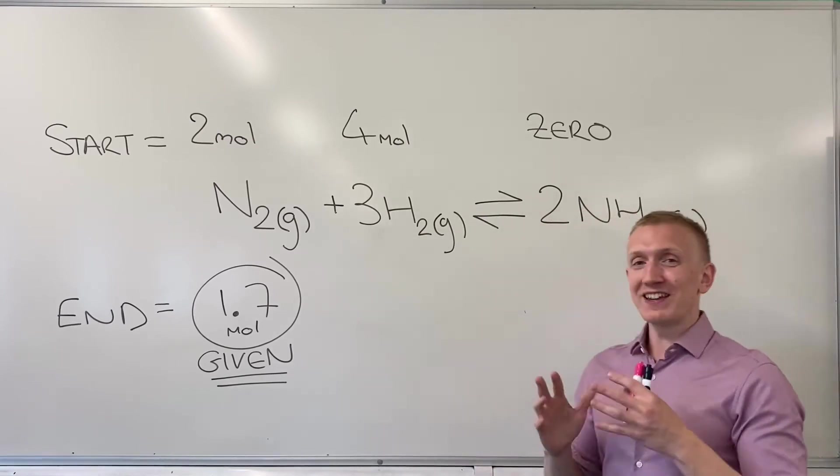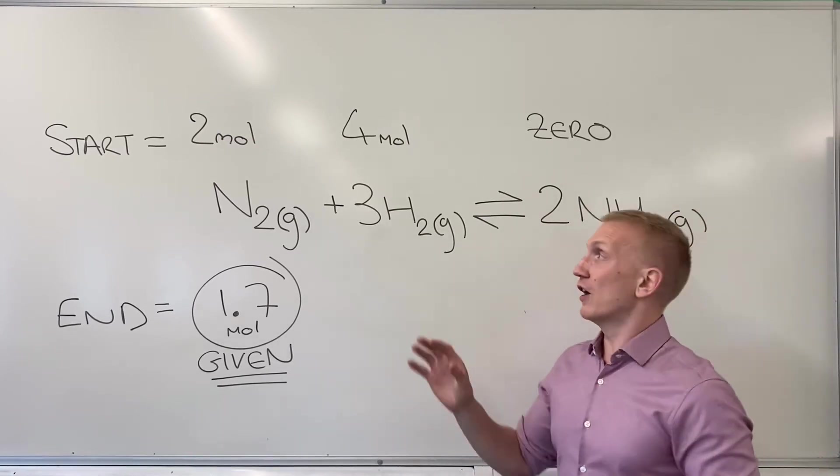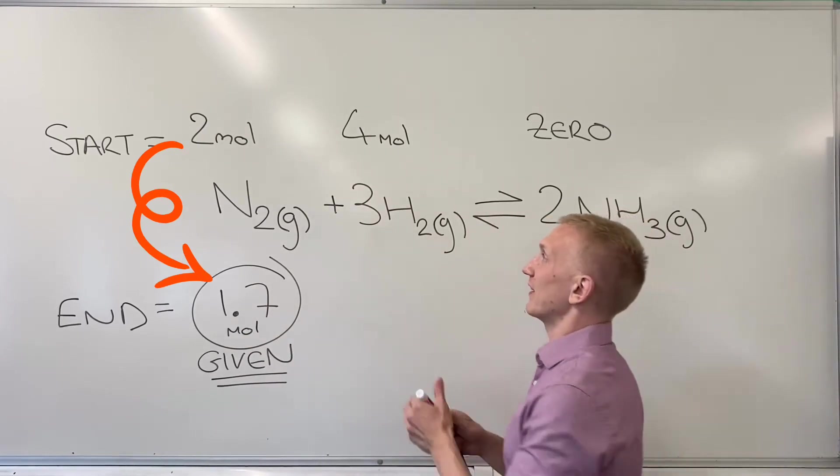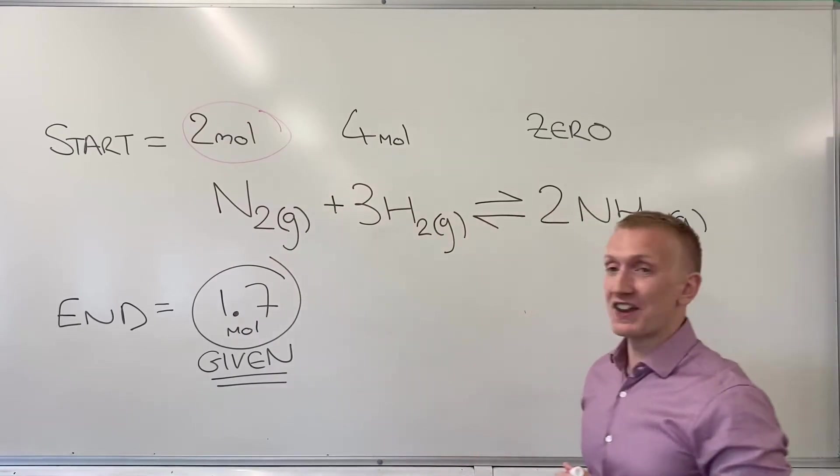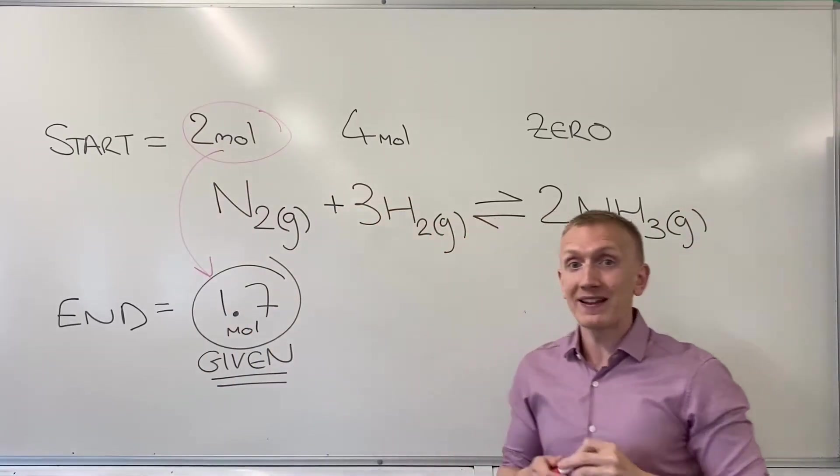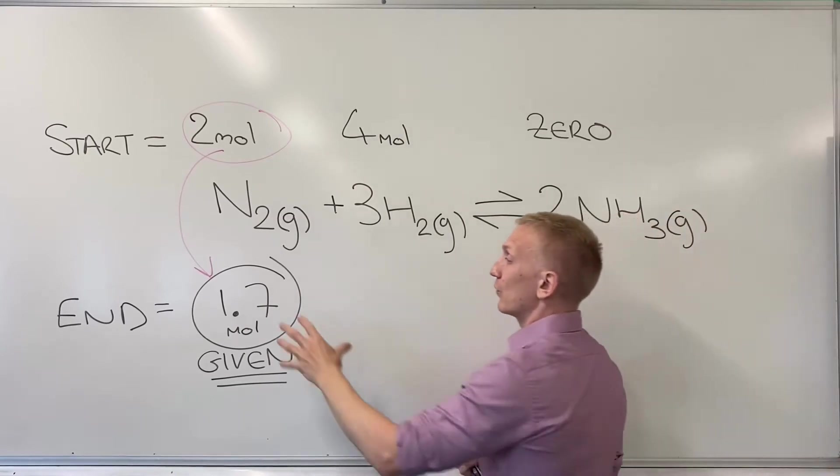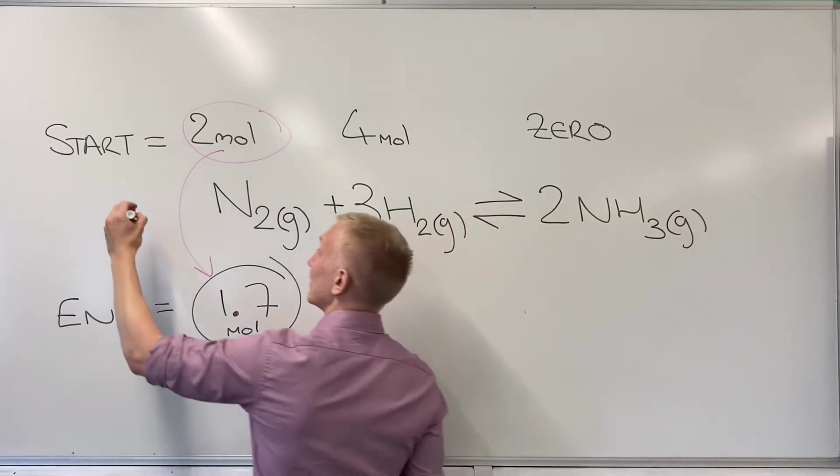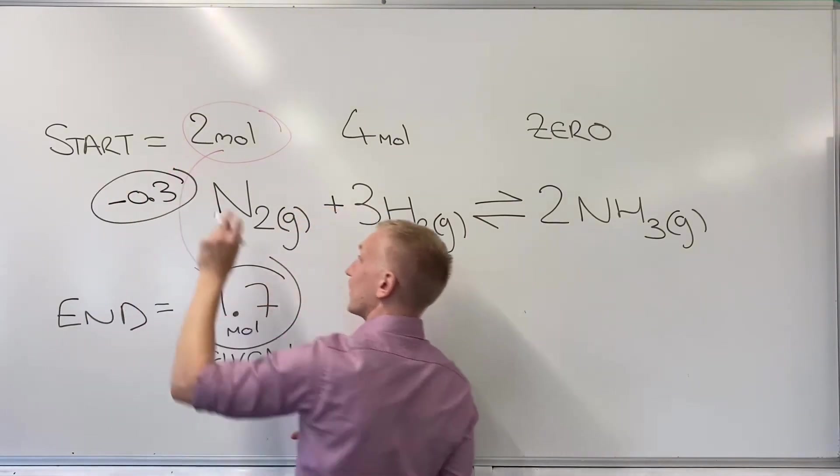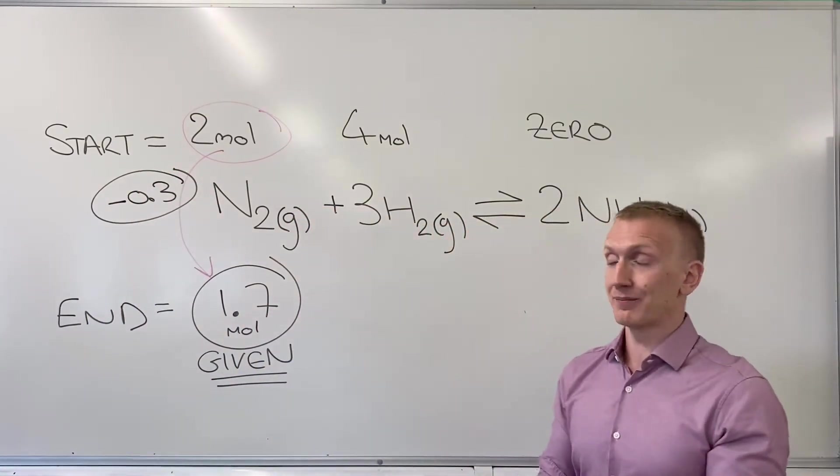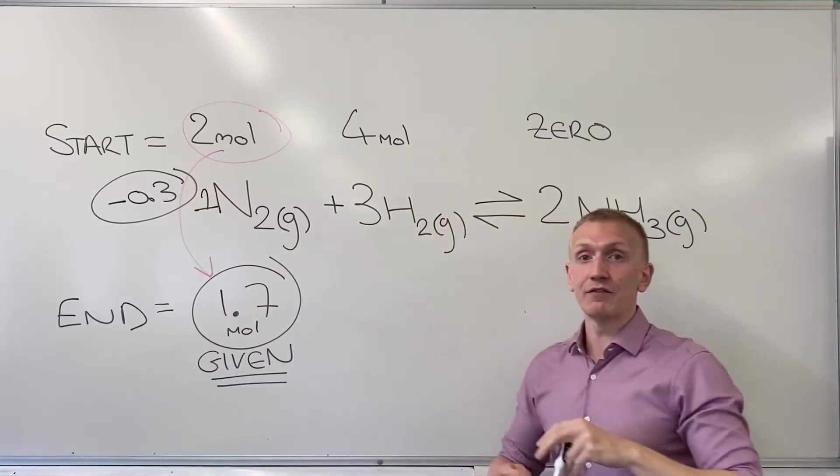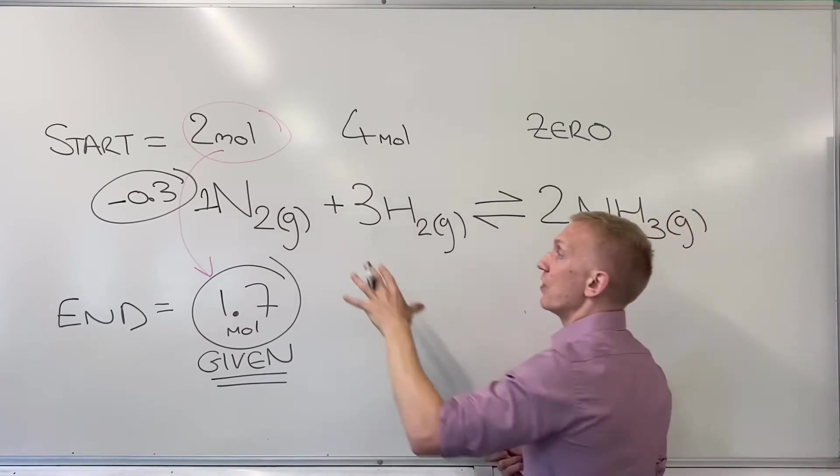So how do we do it? Well we need to look at how things have changed for the one that we have the information for. So here we can see that we've gone from 2 mole of the nitrogen and we've gone down and it's a reactant so you would expect it to react. We've gone down to 1.7 which means our change is minus 0.3. That's what our change has been as a result of that and seeing that there's a one coefficient in front of the nitrogen we're then able to use this information to find out all the others.